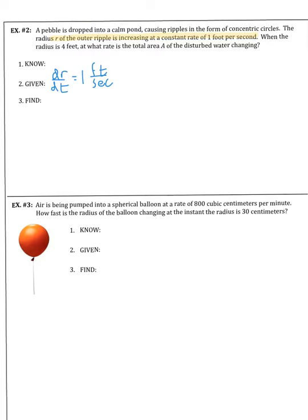When the radius is four feet, at what rate is the total area of the disturbed water changing? We have to find dA/dt — how fast is the area changing. They also told us r equals four feet. So let's start by drawing a picture. I've got a rock dropped into a calm pond creating concentric circles that keep getting wider and wider.